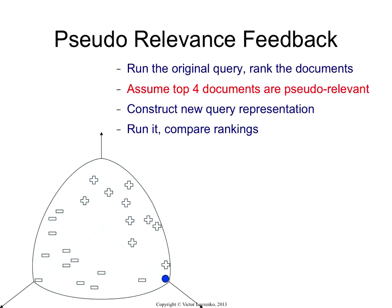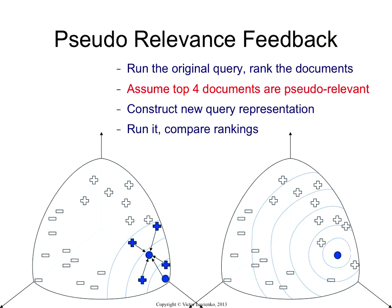So how does this work? Same picture — we have our query. Let's say we take our top four relevant documents. We're going to pretend that all of them are relevant because we don't have the user to tell us otherwise. Compute the mean and compute the new ranking. This example is drawn in such a way that the new ranking is actually better than the old ranking. It's not as good as our ranking from two slides back, but it's a lot better — you get relevant documents at a faster pace than you get non-relevant documents.